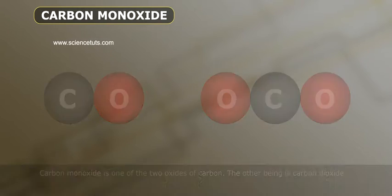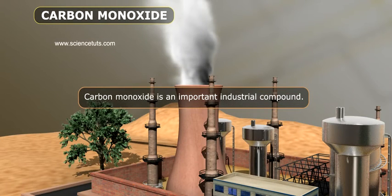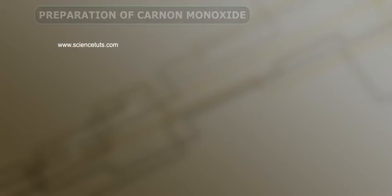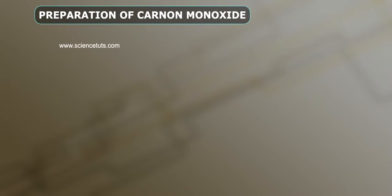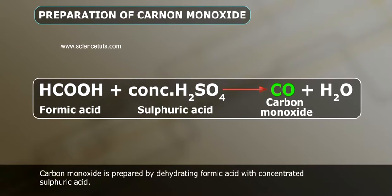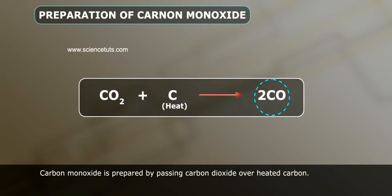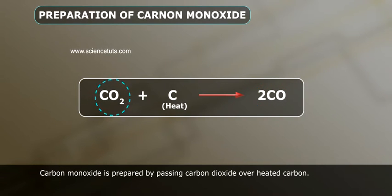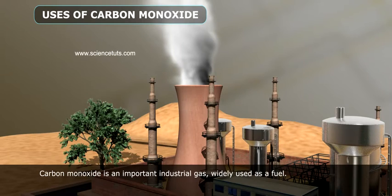Carbon monoxide is an important industrial compound. It is prepared by dehydrating formic acid with concentrated sulfuric acid. Carbon monoxide can also be prepared by passing carbon dioxide over heated carbon.